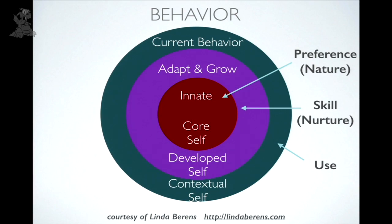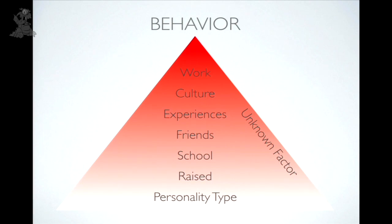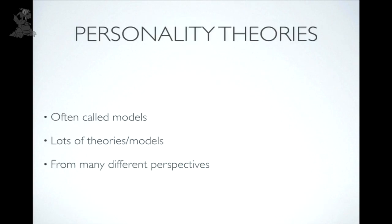Audience show-of-hands: most have heard of the MBTI; fewer have heard of the Big Five; many know their MBTI type code. Another model frames personality as a pyramid: at the base is your innate personality type, layered above by how you're raised, your schools, friends, experiences, culture, and work. Only at the top does observable behavior emerge — so even people sharing the same personality type can act very differently.